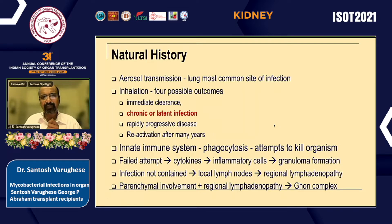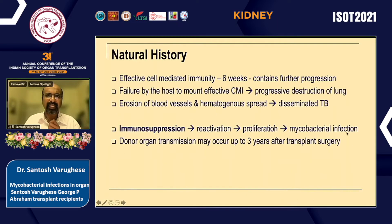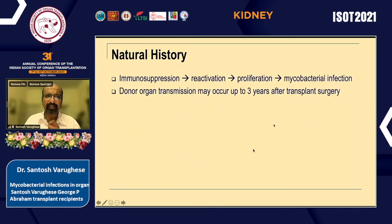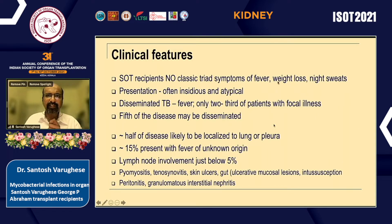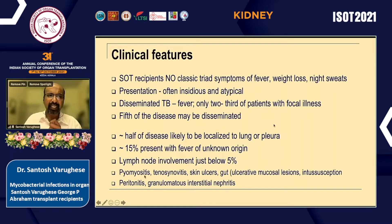As far as organ transplant recipients are concerned, chronic latent infection or reactivation are most important. The immune system attempts to kill the organism, with granuloma and Ghon complex formation. Ineffective cell-mediated immunity can lead to destruction of the lung, erosion, dissemination, or reactivation. Donor transmission can occur even three years after surgery. The classic triad of fever, weight loss, and night sweats is not the typical presentation in transplant recipients — presentation is often insidious and atypical, with about half the disease in the lung or pleura and 15 percent presenting as PUO.